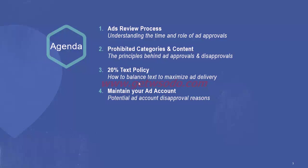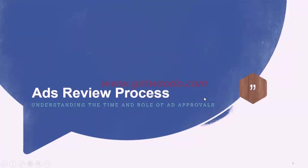Let's set the agenda for this module. We will cover: first, the ads review process — understanding the time and role of ad approvals, and what happens after you click the Place Order button. Second, what are the prohibited categories and content types on Facebook. Third, the principles behind ad approvals and disapprovals. Fourth, the 20% text policy — how to balance text on an image to maximize ad delivery. And finally, how to maintain your ad account to keep it running.